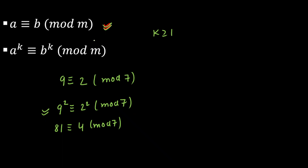So this property is really useful. To state it again: if A is congruent to B mod M, then A raised to power K is congruent to B raised to power K mod M. I'll see you in lecture 2, where I'm going to start questions based on these properties.